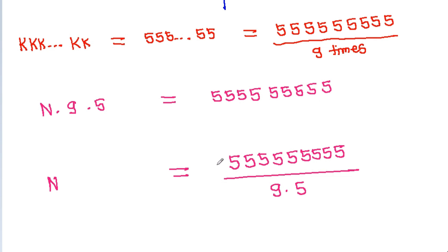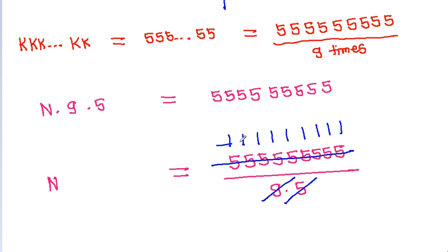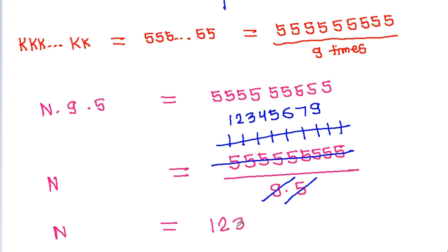Dividing 555555555 by 5 gives 111111111 (one repeated 9 times), and dividing by 9 gives 12345679. So n equals 12345679.